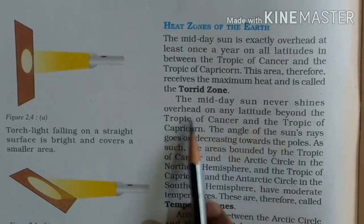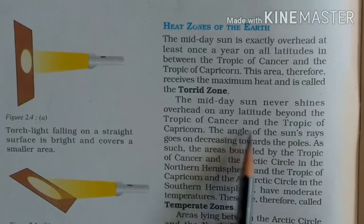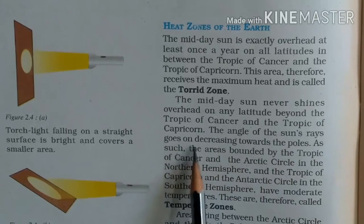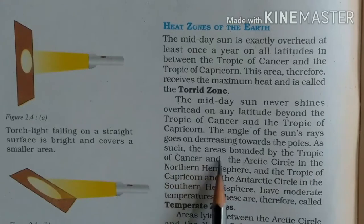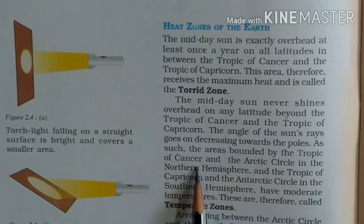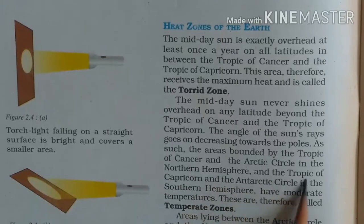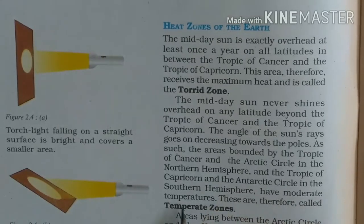The midday sun never shines overhead on any latitude beyond the Tropic of Cancer and the Tropic of Capricorn. The angle of the sun's rays goes on decreasing towards the poles. As such, the areas bounded by the Tropic of Cancer and the Arctic Circle in the Northern Hemisphere, and the Tropic of Capricorn and the Antarctic Circle in the Southern Hemisphere, have moderate temperatures. These are therefore called temperate zones.